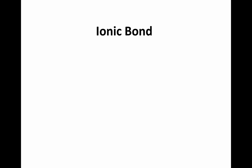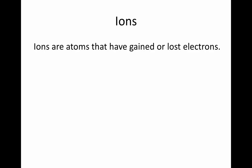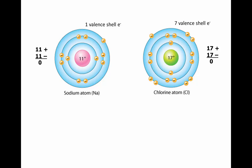An ionic bond is a type of bond formed between atoms in order to fill their valence shell. An ionic bond forms between two ions, which are atoms that have gained or lost electrons. Let's take a look at two neutrally charged but unstable atoms: sodium and chlorine.